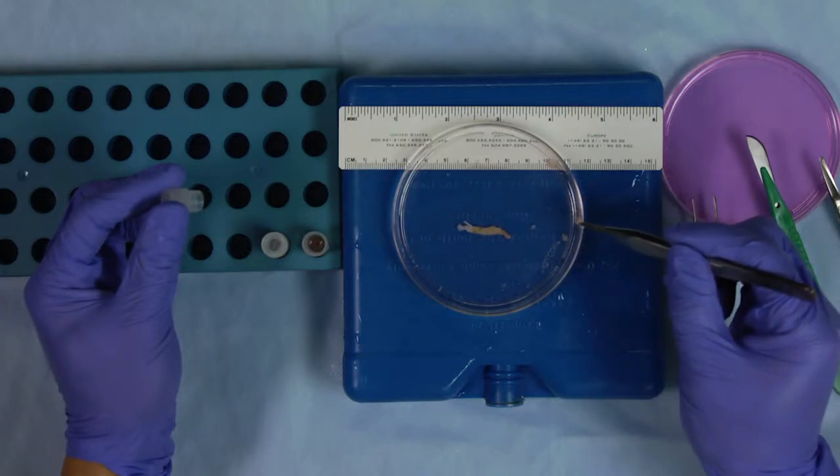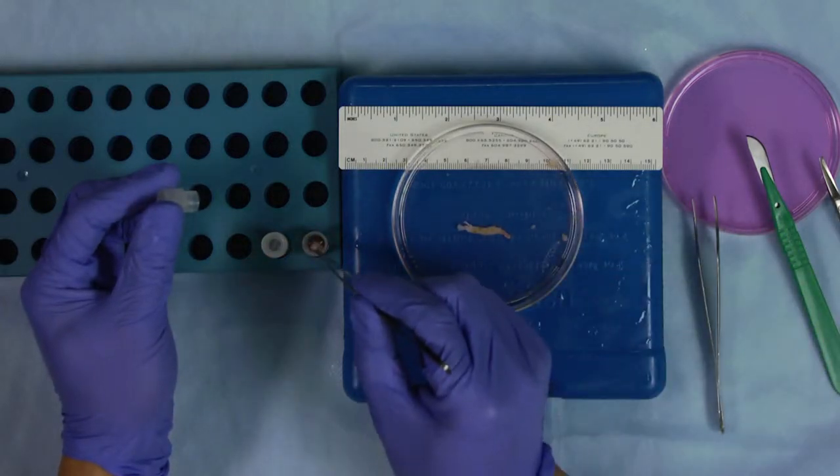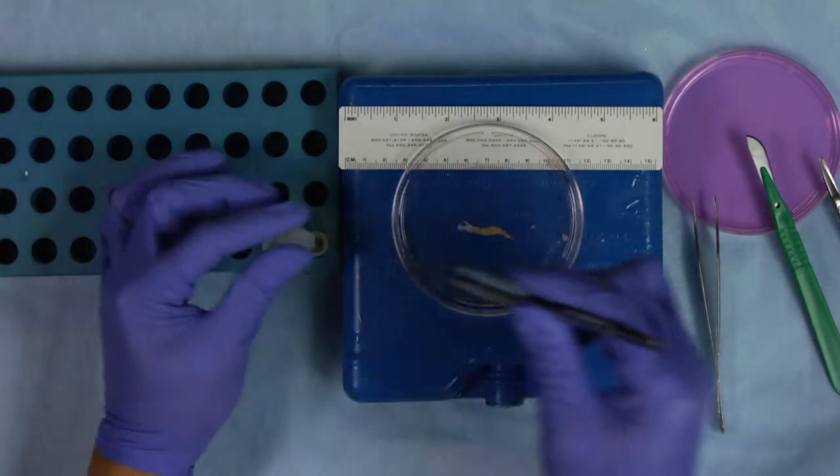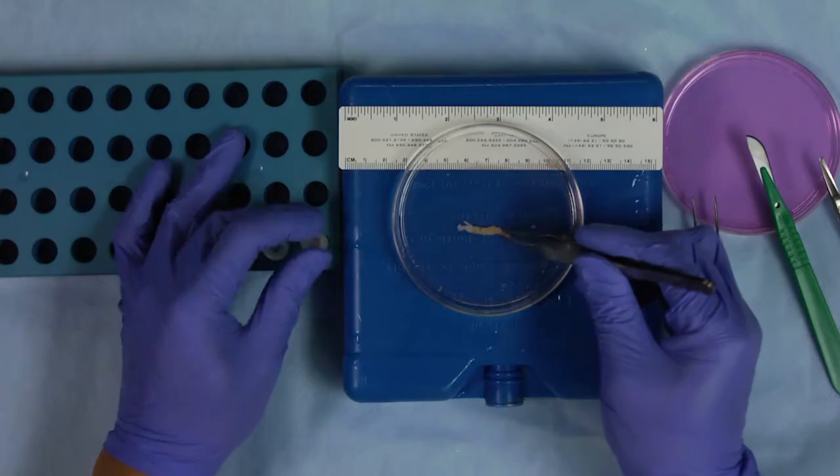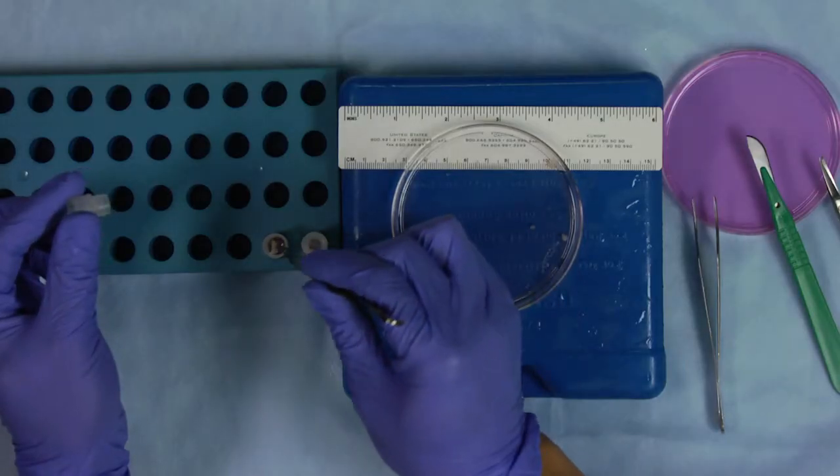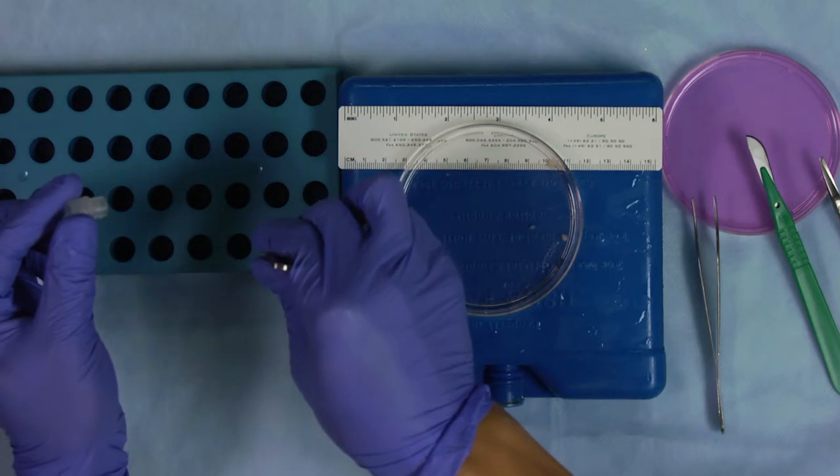For the patient tissue, transfer the tissue into cold cryomedia and gently shake for a few minutes. Load the tissue into the vials preloaded with 0.8 milliliters of cryomedia, approximately one to two pieces per vial following the protocol that's described in the NPC manual.